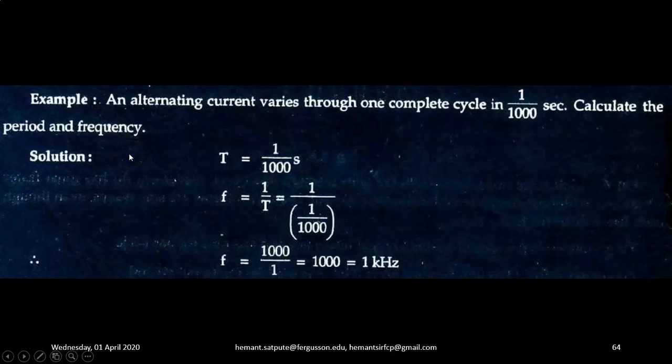Let's take a couple of quick examples. An alternating current varies through one complete cycle in 1/1000 seconds. Calculate the period and frequency. Solution: Period is the reciprocal of frequency and vice versa. Here, the period is given: T = 1/1000 seconds. So frequency is the reciprocal of period: f = 1/(1/1000) = 1000 hertz or 1 kilohertz.